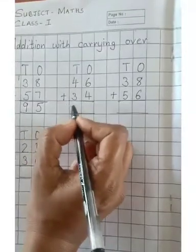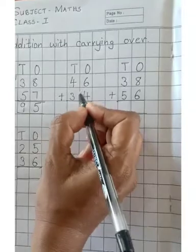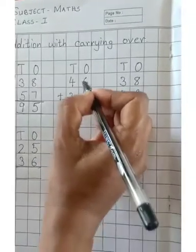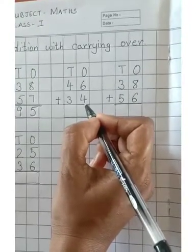46 plus 34. So we will count from the ones place. 6 plus 4.